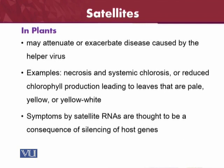In plants, satellite viruses may attenuate or exacerbate diseases caused by helper viruses. Since helper viruses are complete viruses that can cause significant diseases, satellites can exaggerate those disease effects. Examples include necrosis and systemic chlorosis — reduced chlorophyll production leading to pale, yellow, or yellow-white leaves. Symptoms caused by satellite RNAs are thought to be a consequence of silencing of host cell processes.